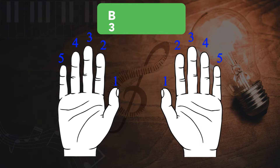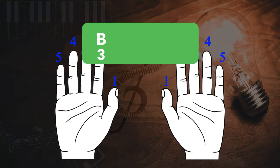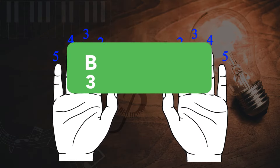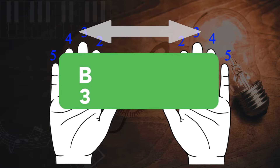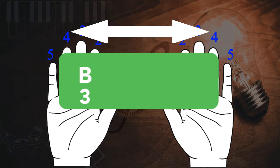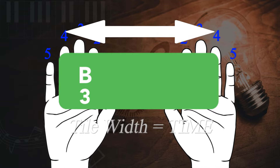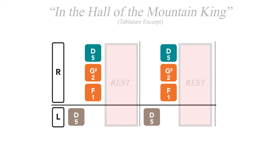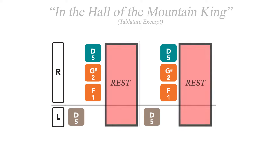Timing is determined by the width of the tile. Wider tiles are held longer than narrow tiles. If you come across an empty space, it's equivalent to a rest — nothing should be played. For the width of that empty space, there will be silence.